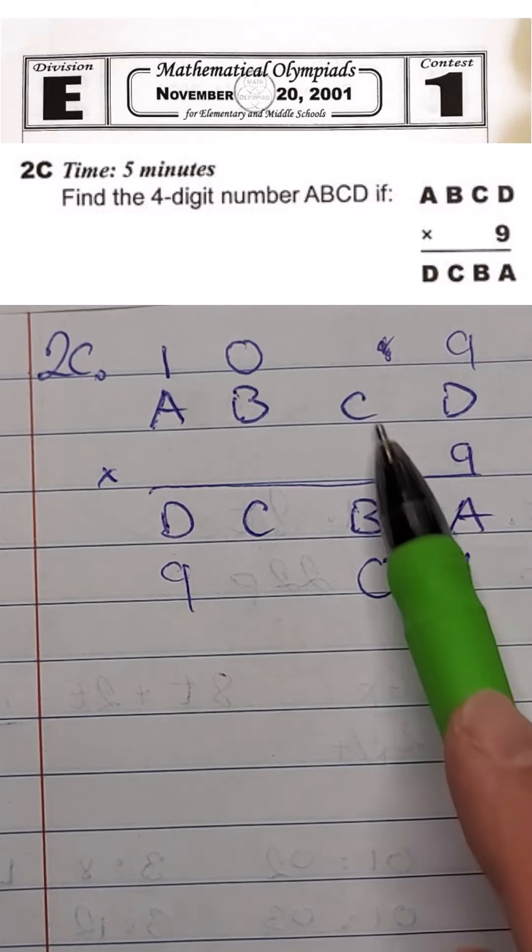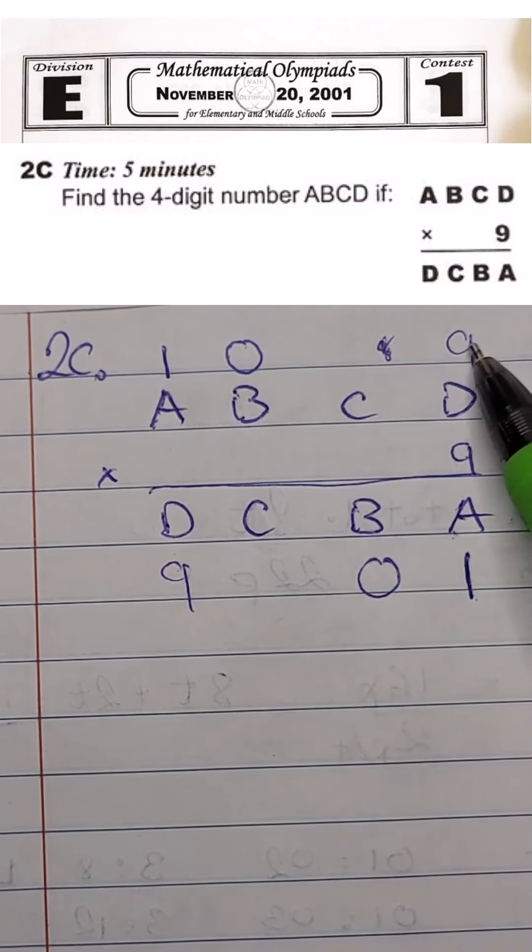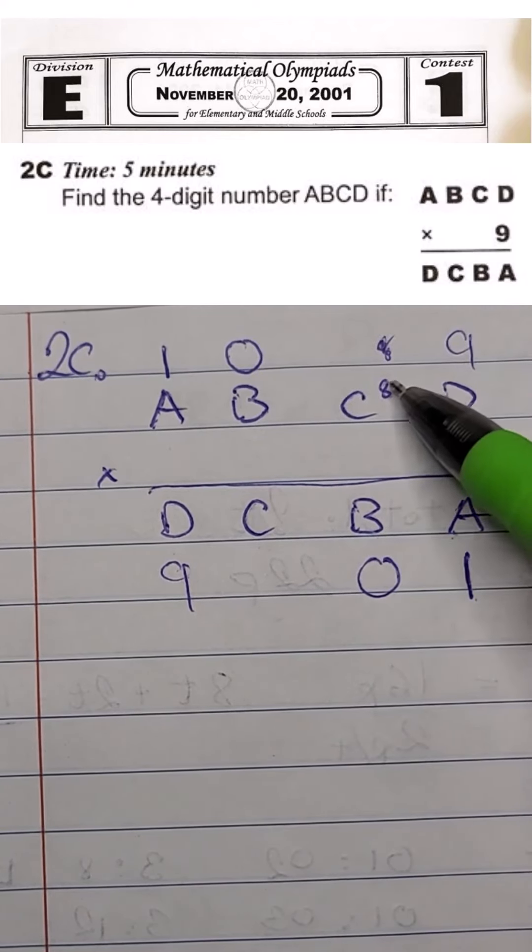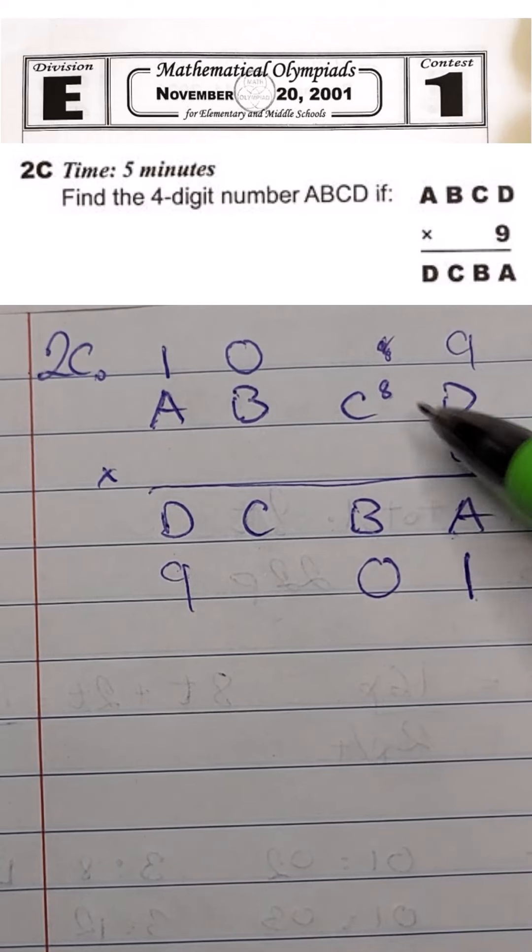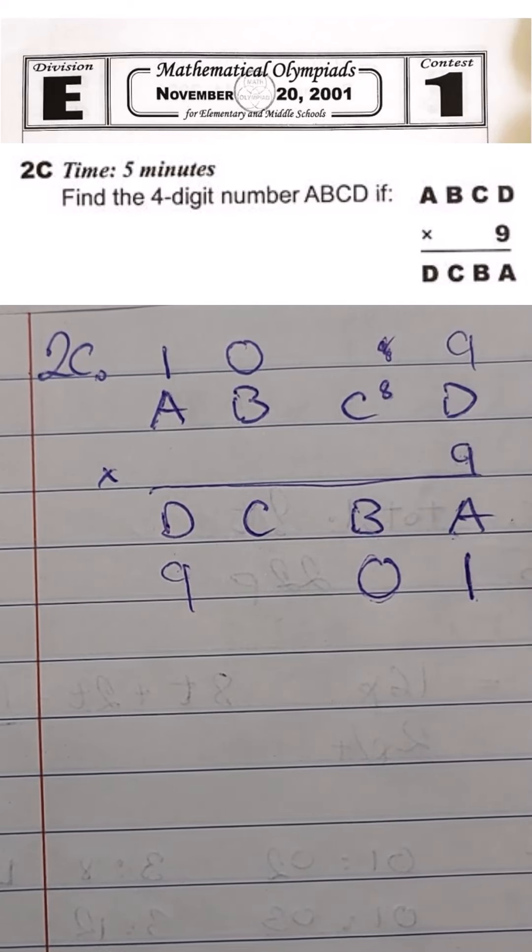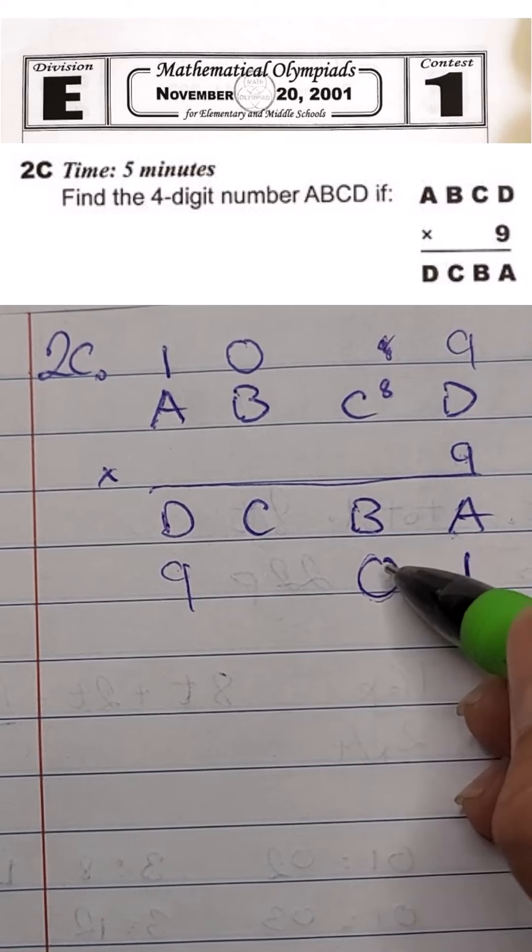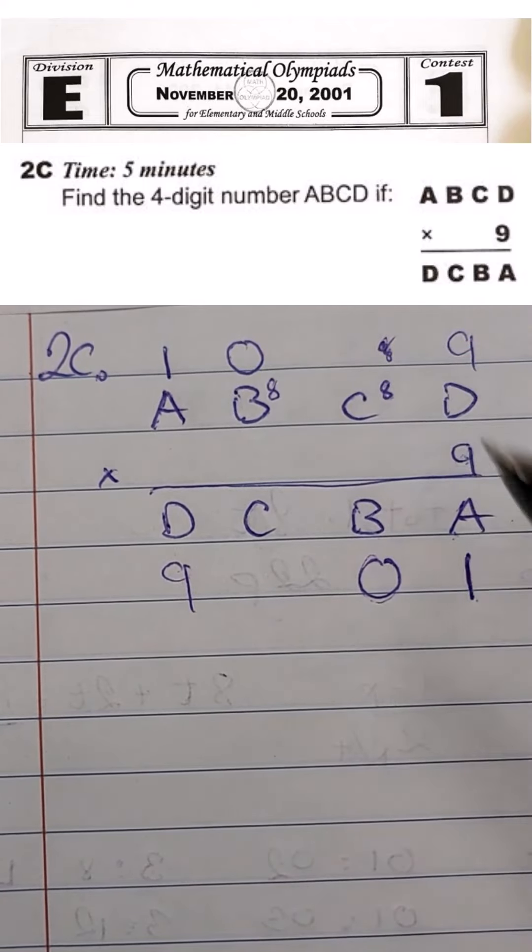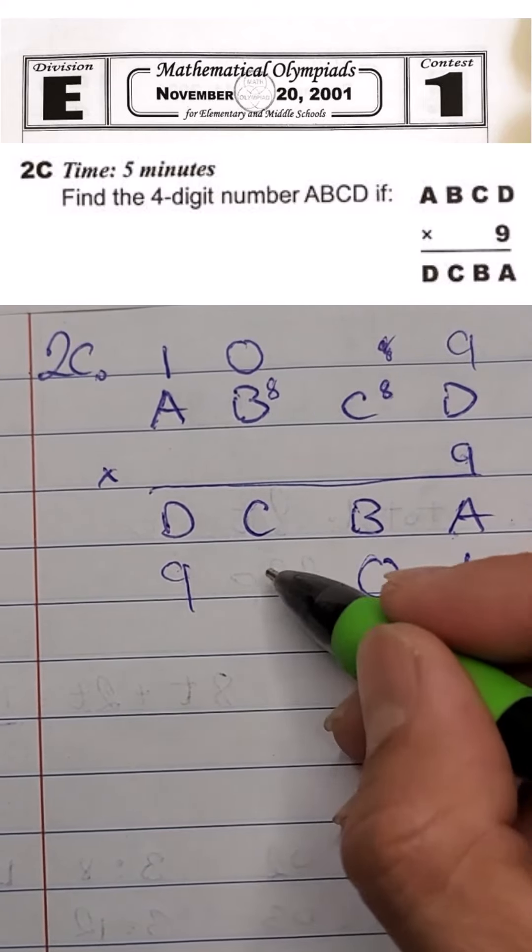9 times what number adding the 8 that we carry? Because 9 times 9 equals 81, we write the 1, we carry the 8. 9 times what number plus 8 would give us a 0 ending? 9 times 8 equals 72, plus 8 equals 80. We would write 0, carry the 8. 9 times 0 plus 8 equals 8.